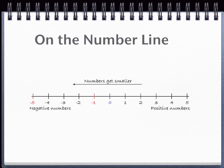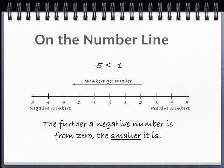That means that even though five is more than one, negative five is less than negative one. Five less than zero is less than one less than zero. Number line doesn't lie.